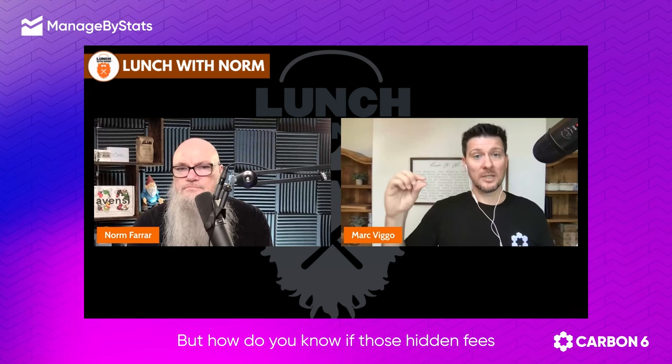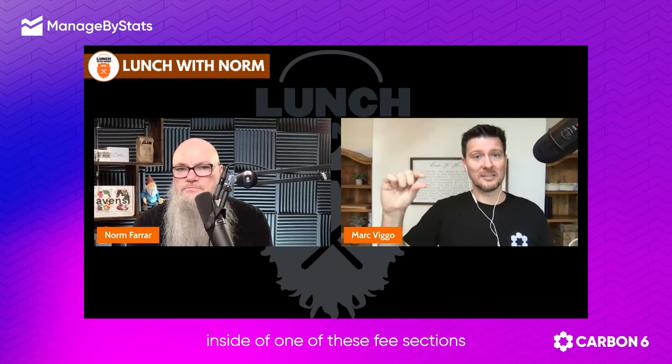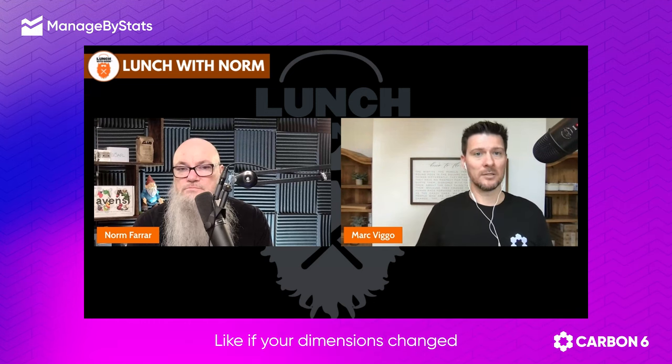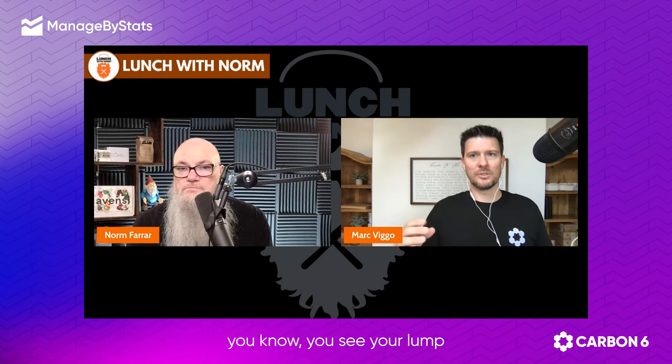You have that total number there, but how do you know if those hidden fees — those little elements inside one of these fee sections — are going up or down? Like if your dimensions changed, you have no way of seeing that. You just see your lump sum of Amazon fees.